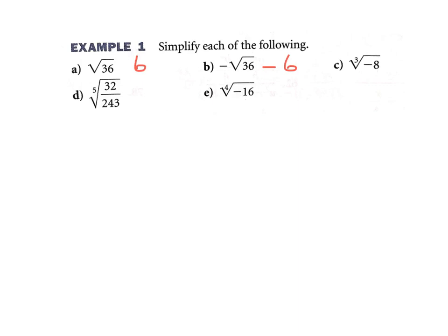If it's a cube root, you're okay to do cube roots of negative numbers, but no even roots of negative numbers. So part c would be negative 2, because negative 2 times negative 2 times negative 2 would be negative 8. If you have a fraction inside, the 5th root of 32 over 243 — take each one at a time. The 5th root of 32 is 2, and the 5th root of 243 is 3.